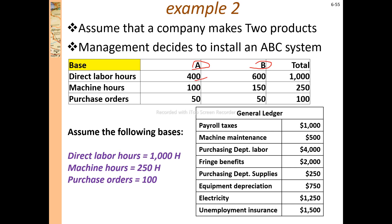For Product A, here is the direct labor amount. The percentage relates to the two products, and here is the direct labor of the current cost.